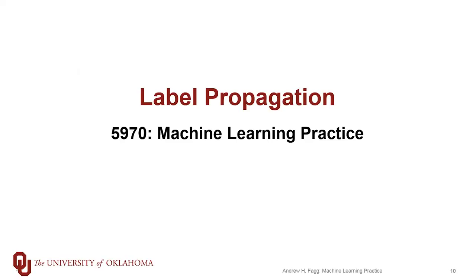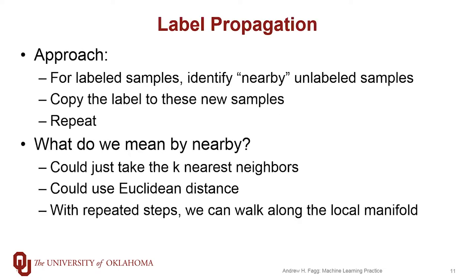We're going to start by focusing on the classification problem in a particular class of algorithms called label propagation. The general idea behind the algorithm is this: first we start by looking at samples that have labels, then we identify the nearby samples that do not have labels yet, and then we copy those labels out to those nearby samples. This process repeats and we continue to repeat until the entire set of samples has either a true label or a pseudo label.